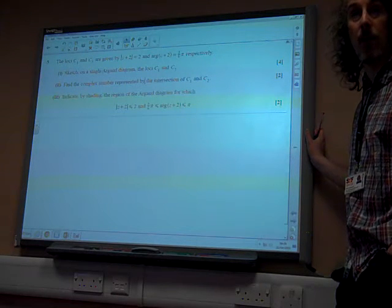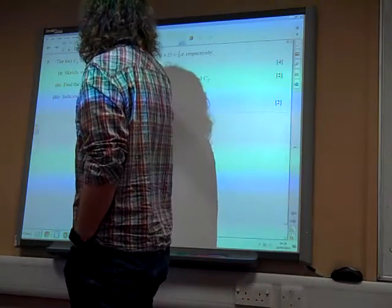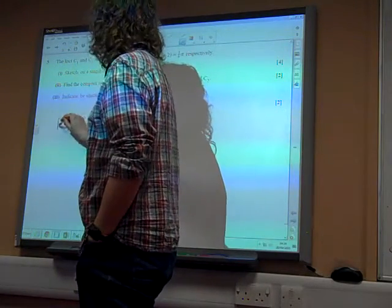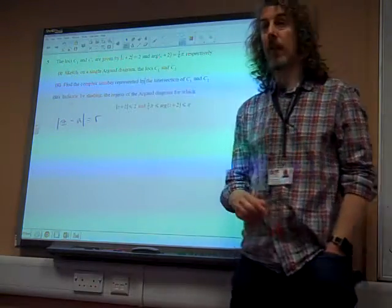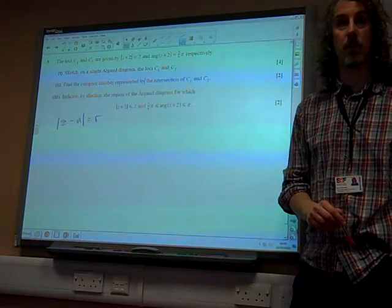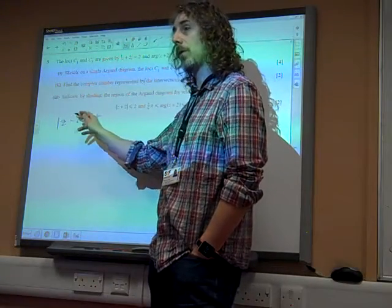First thing to remember about loci: we know that this one, the general form, is the one that's a circle, isn't it? That is a circle, center A, with radius R.